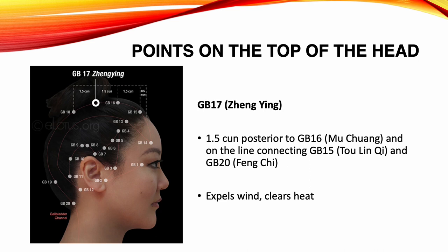Gallbladder 17, Chung Ying. Location: 1.5 Sun posterior to Gallbladder 16, on the line connecting Gallbladder 15 and Gallbladder 20. Functions: expels wind, clears heat. Indications: headache, stiffness of the neck, vertigo, toothache, vomiting.